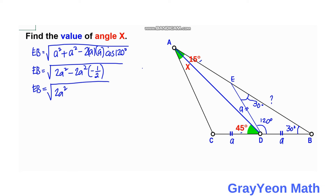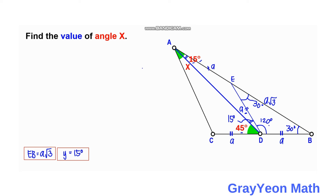Notice that angle Y is 15 degrees, the same as the 15-degree portion of angle A. Since two angles are congruent, the sides opposite to them must be equal. So the side opposite the 15-degree angle at D also has length A, making triangle AED an isosceles triangle with AE equal to A.